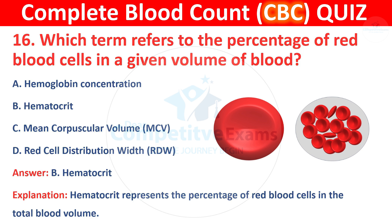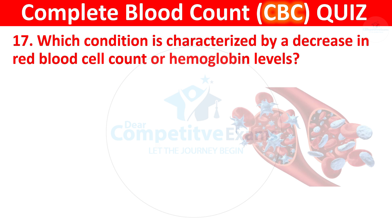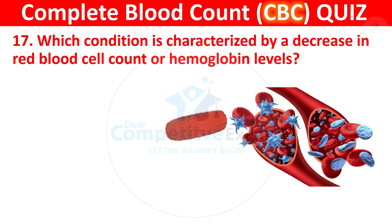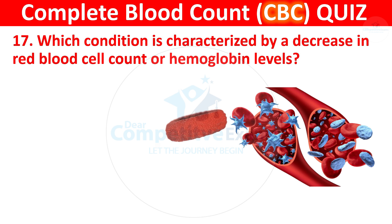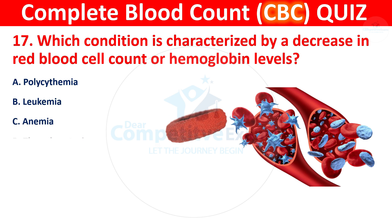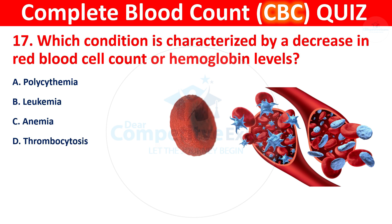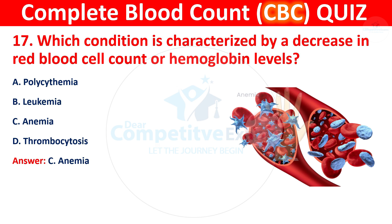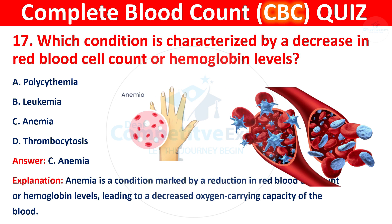Question 17: Which condition is characterized by a decrease in red blood cell count or hemoglobin levels? The correct answer is C, anemia. Anemia is a condition marked by a reduction in red blood cell count or hemoglobin levels, leading to decreased oxygen-carrying capacity of the blood.